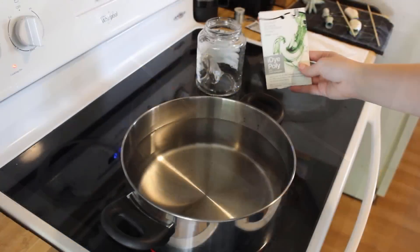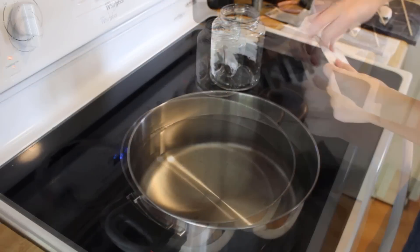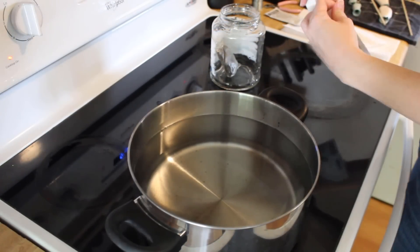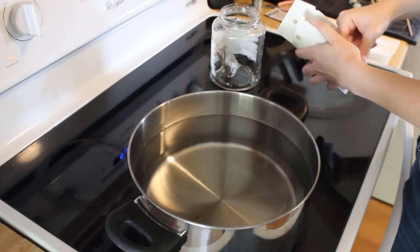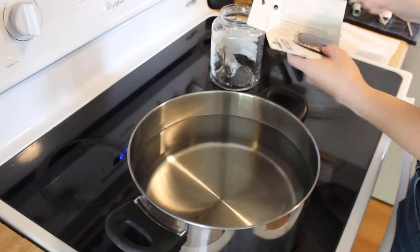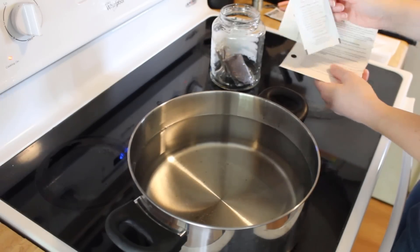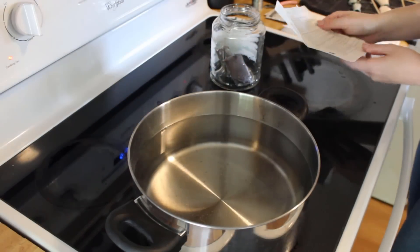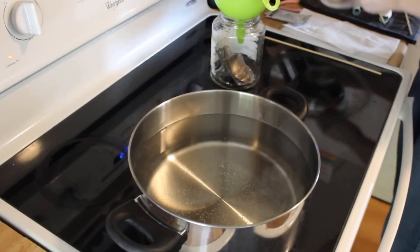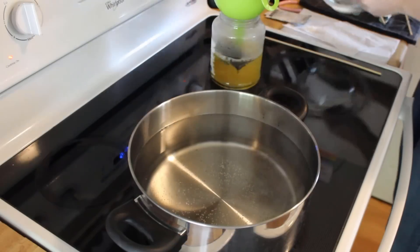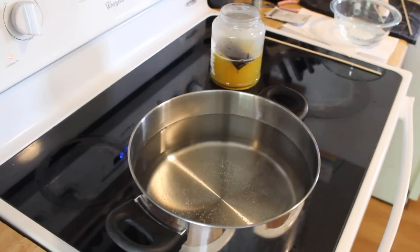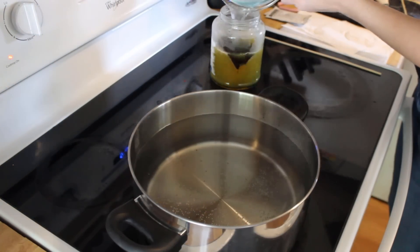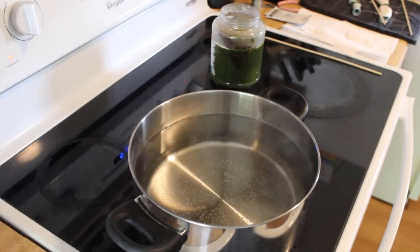Since it came highly recommended, this time I'm using iDye Poly. And because the pieces still have a blue cast, I'm mixing green and yellow, in hopes the yellow will counteract the blue. While the dye pot comes to a boil, I bring a smaller container of water to a boil in the microwave, and throw the dye packets into a glass jar. The boiling water will dissolve the packets completely, so I can pour the dye concentrate into the pot when it's ready.